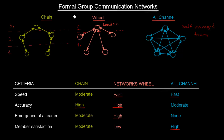So those were the various kinds of communication networks: chain, wheel, and all channel. The choice between these three is going to depend upon the criteria which is most valuable for you — whether that is speed, accuracy, emergence of a leader, or member satisfaction.